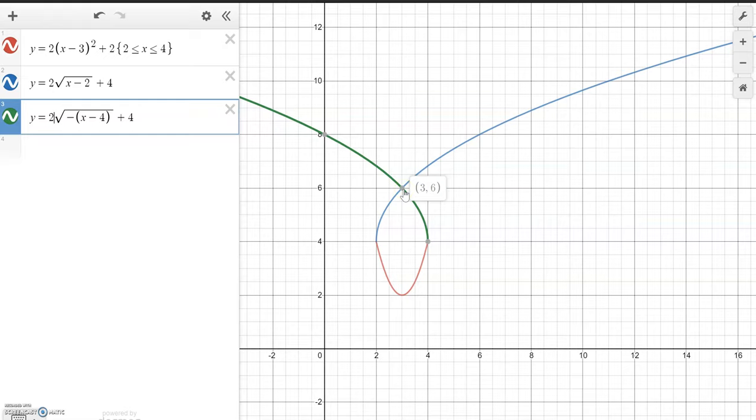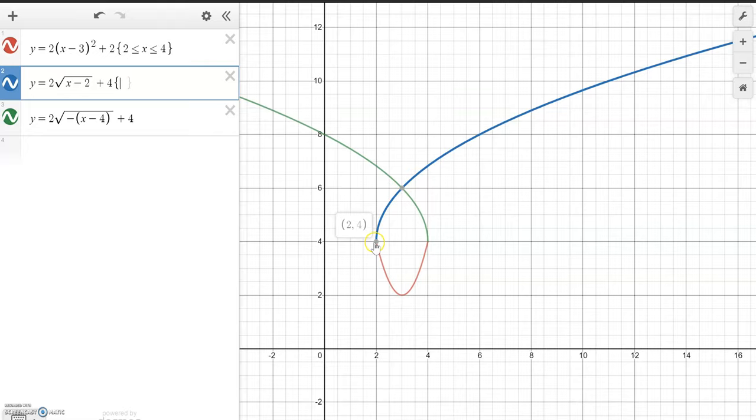So for the blue equation, I'm going to have the constraint of 3. Now, I don't have to set it from 2 to 3. I can. I don't have to. So if I set it between 2 to 3, that's what I'm going to get.